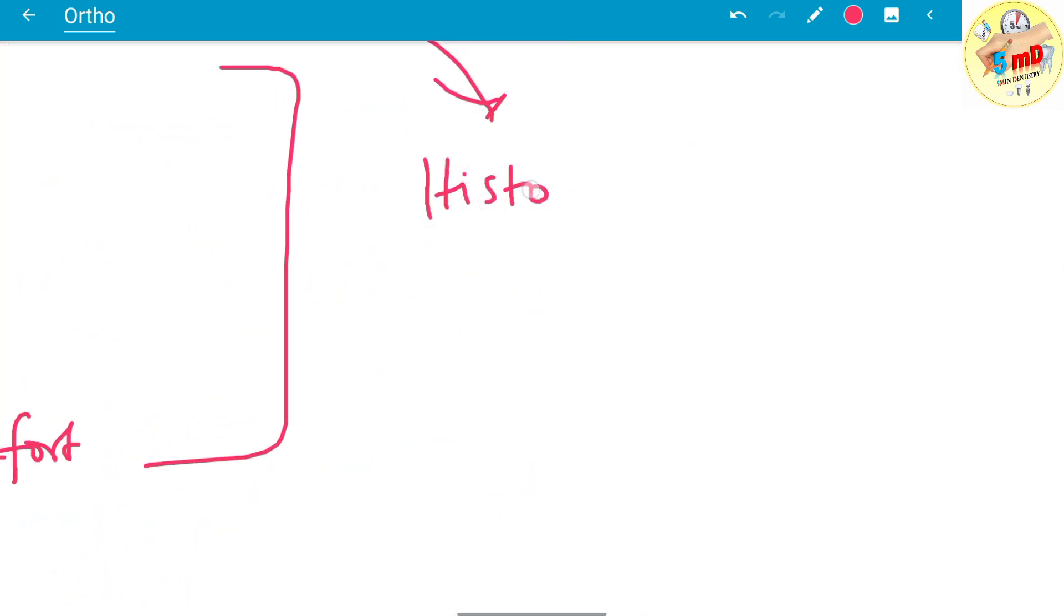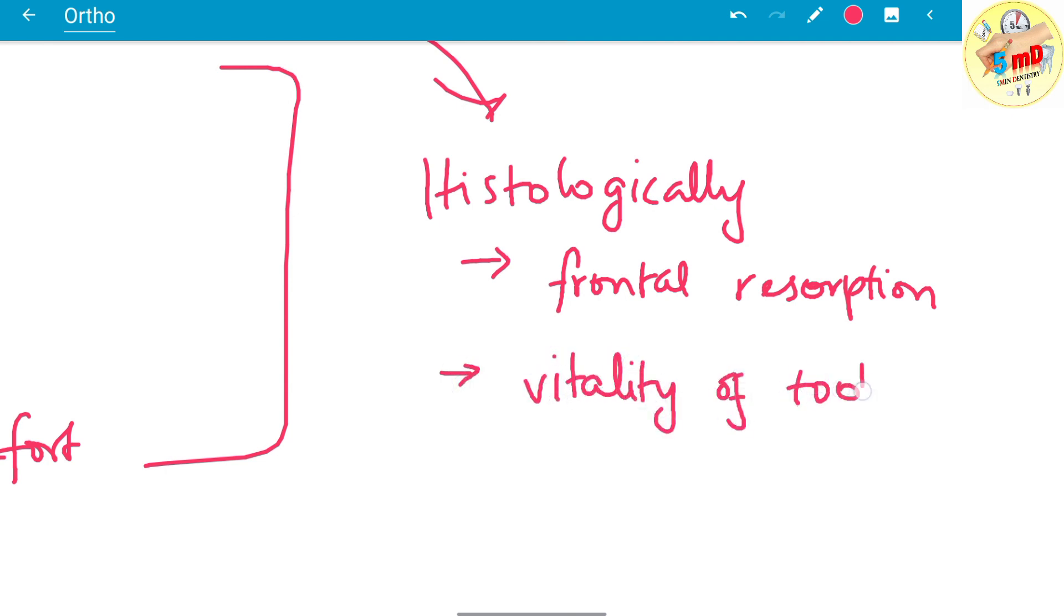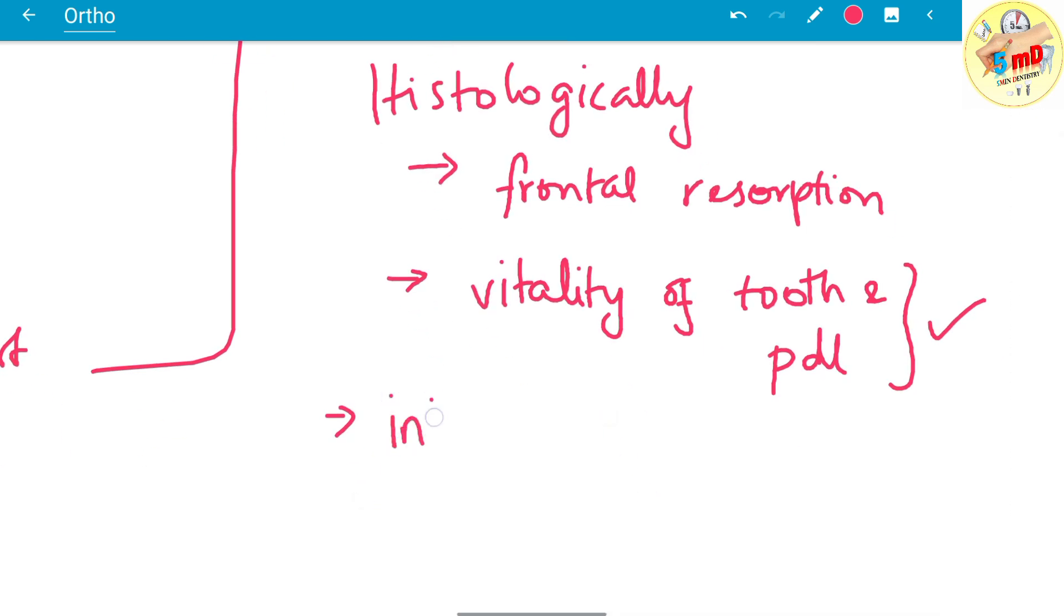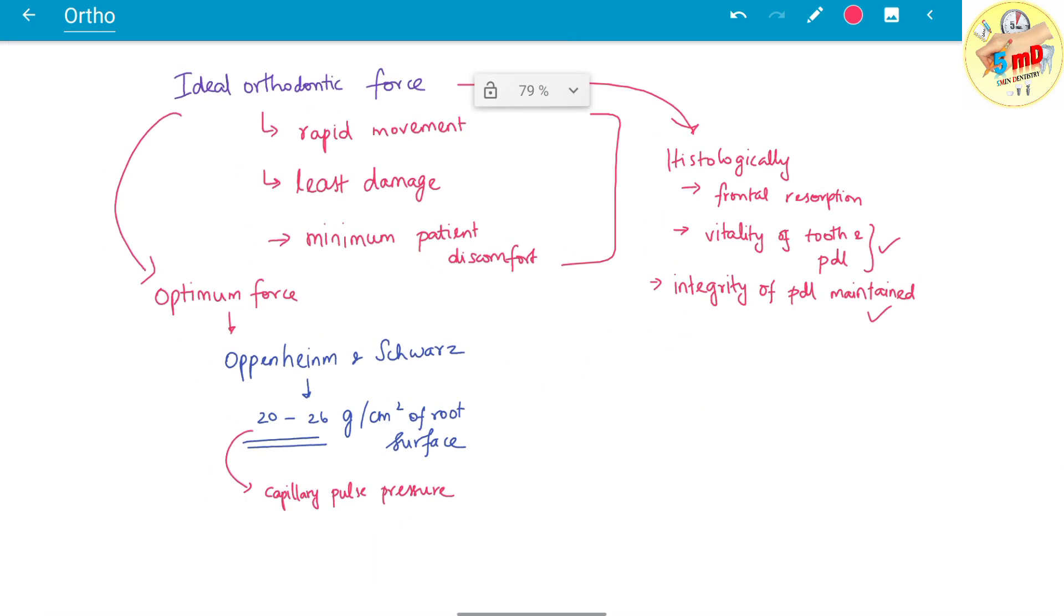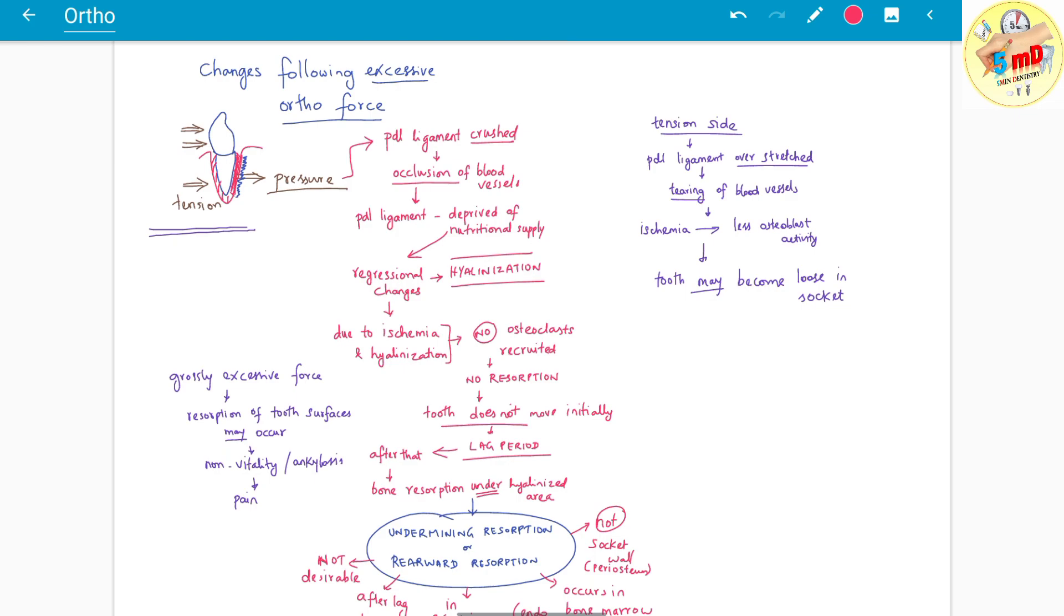Histologically we can also confirm it by the forward resorption or frontal resorption which is present—no undermining or rearward resorption—and vitality of the tooth and the periodontal ligament are maintained. Similarly the integrity of the periodontal ligament is also maintained. There is no tearing or crushing of the periodontal ligament.